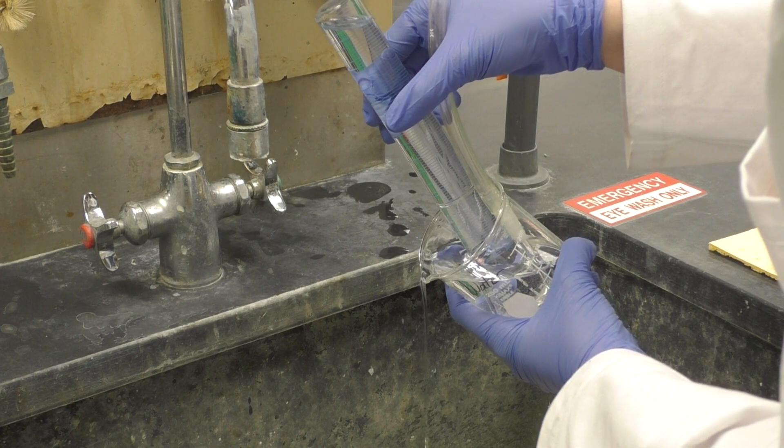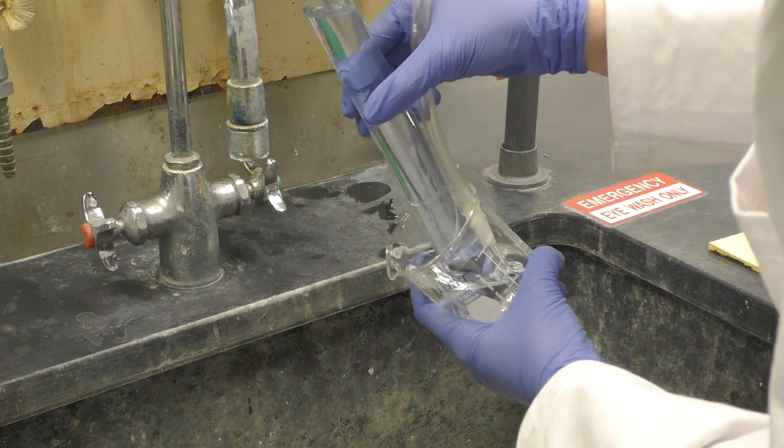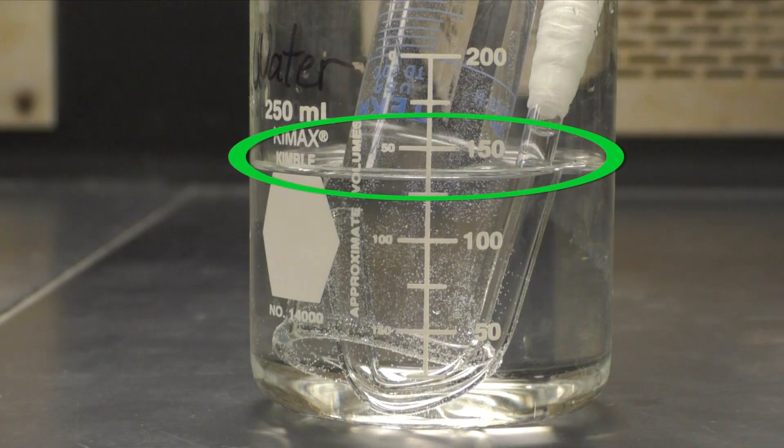Finally, hold the graduated cylinder and J-tube in place while you empty out the water from the beaker until the water level is just below 150ml.